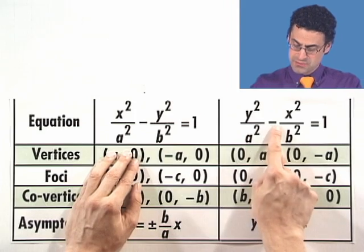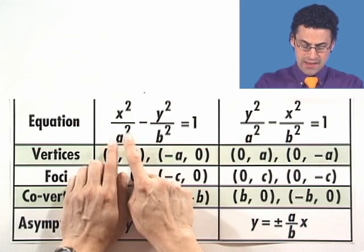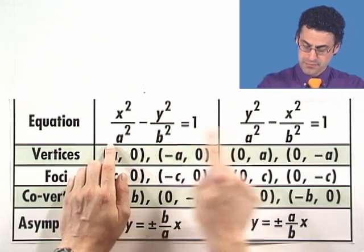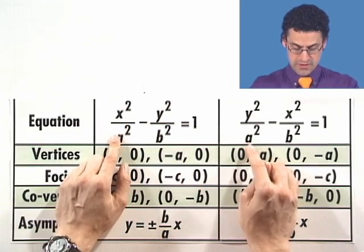And similarly here, when these things are switched, then we see the minus sign here. So the a is always going to be hooked up with the positive term, whether it's an x or a y. That's an important thing to notice.